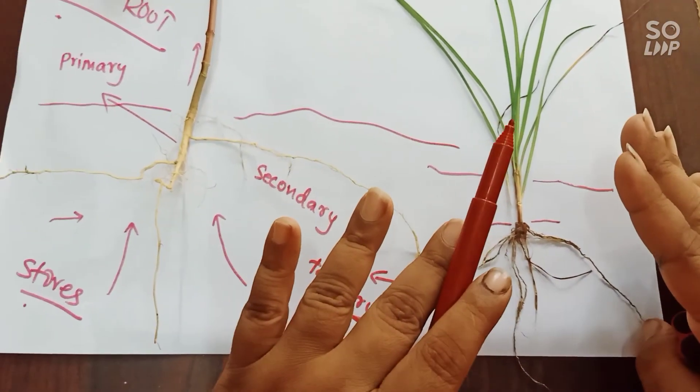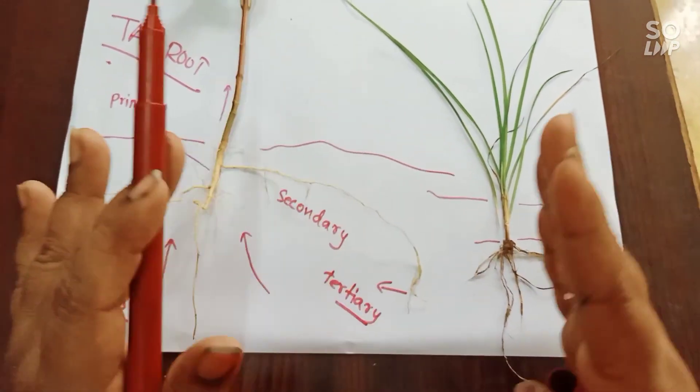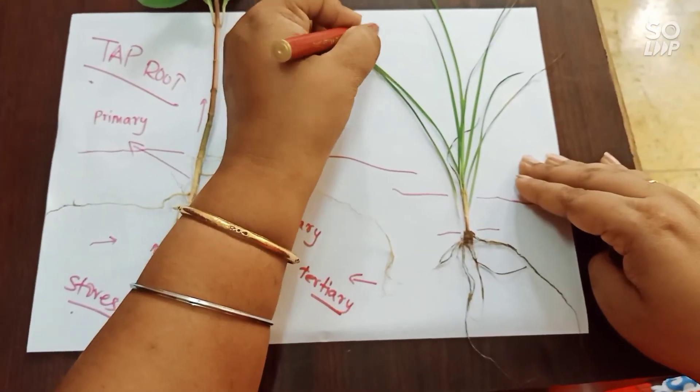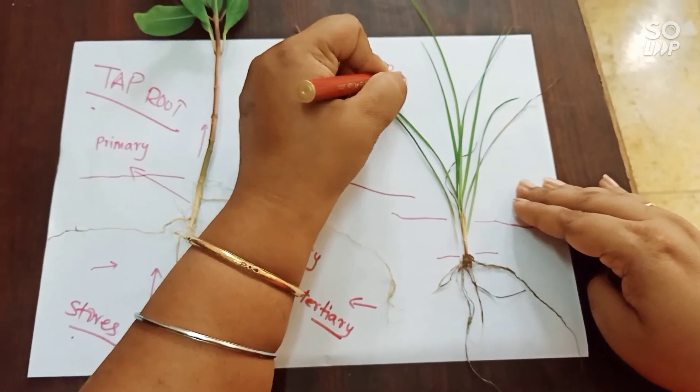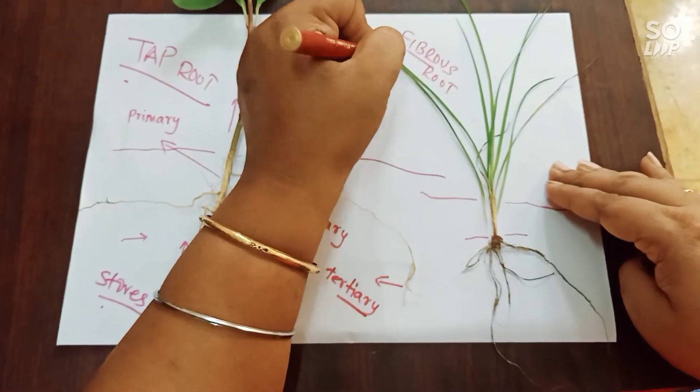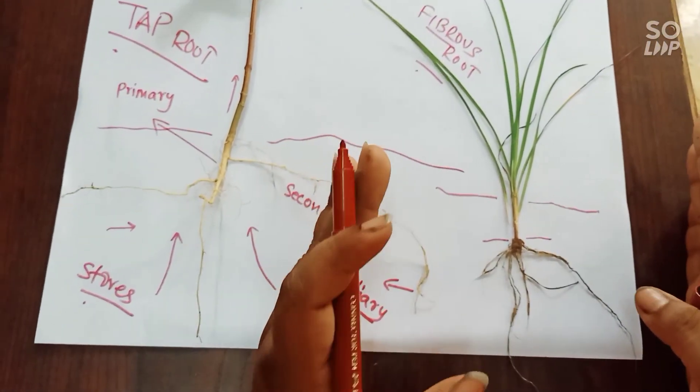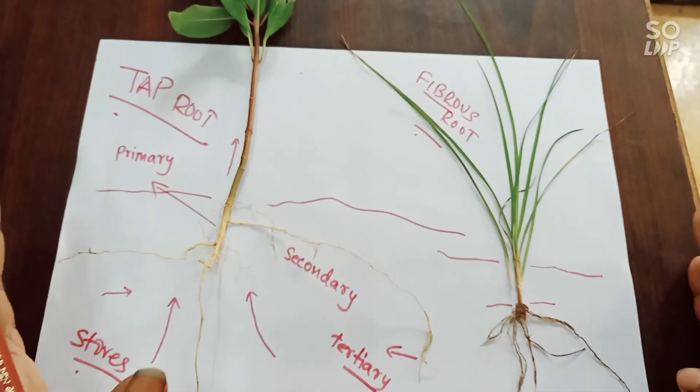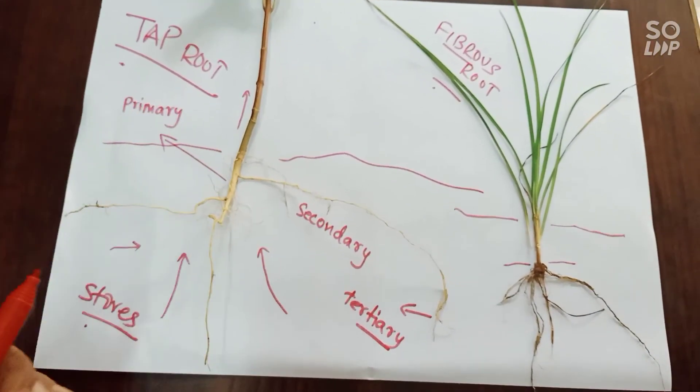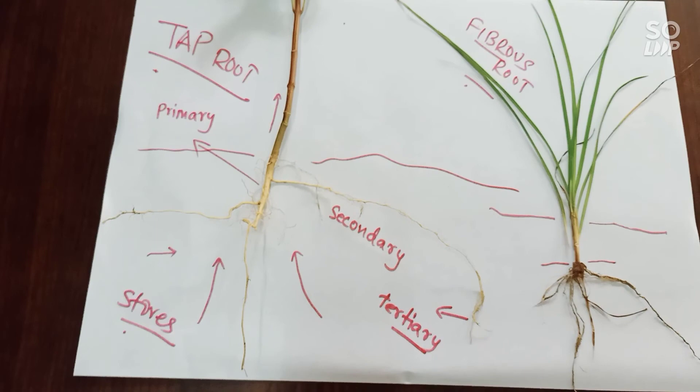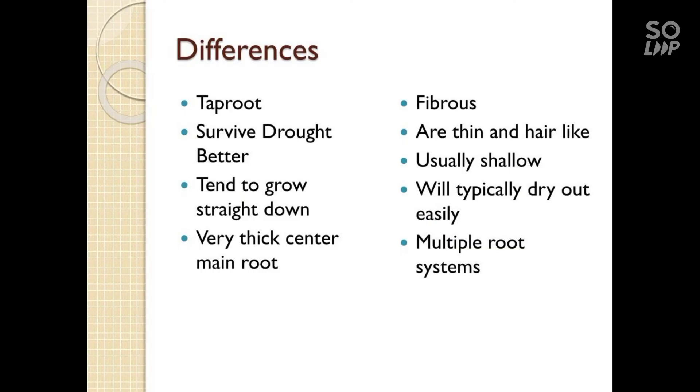So these are the two different types of roots: tap root and fibrous root. Hope you understood what a tap root and what a fibrous root is. I will be displaying a difference between the tap root and the fibrous root just after this. Happy learning. Thank you. Bye-bye.